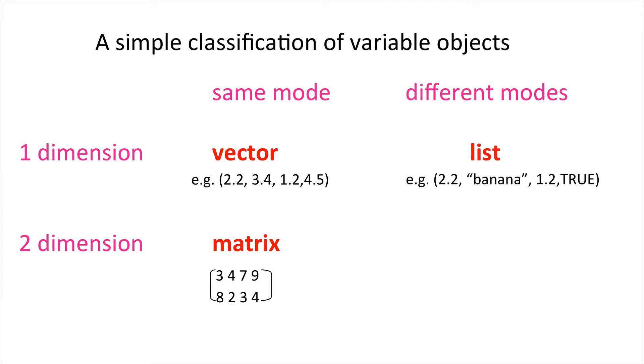When we've got a linear array of elements, and those elements could potentially have different modes, then we have a list. So we can have character strings like bananas, true, false, and numbers. And perhaps the most versatile and general form is a two-dimensional collection of elements with different modes, and that is called a data frame.